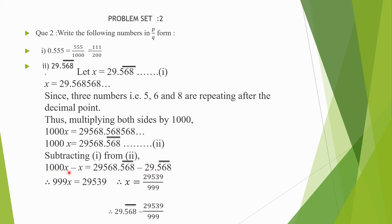Now we will subtract equation No. 1 from equation No. 2. So 1000x minus 1x is equal to 29568.568 bar minus 29.568 bar. When we subtract, 1000 minus 1 gives 999x on the left side, and subtracting 29 from 29568 gives us 29539 on the right side. Therefore x is equal to 29539 upon 999. Therefore 29.568 bar is equal to 29539 upon 999.